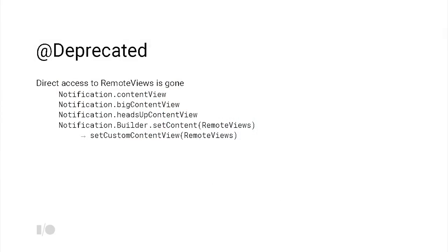A brief moment of silence for APIs that are no longer with us: specifically all direct access to remote views on notification — ContentView, BigContentView, HeadsUpContentView are not there anymore. We're not even creating them. If you use the builder methods, those APIs won't be populated. Use builder.setCustomContentView instead — we renamed the method to better match other recent additions.